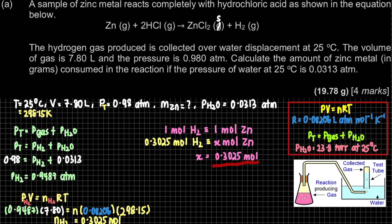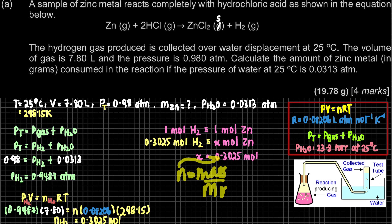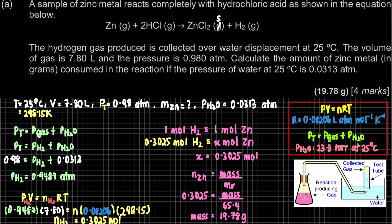Now that we have the moles of zinc, we can find the mass. Using n = m / M: molar mass of zinc is 65.4 g/mol (from the list of constants). Substituting: mass of Zn = 0.3025 × 65.4 = 19.78 g. That is the answer the question requires — the mass of zinc.